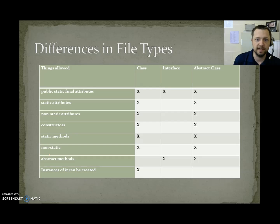Differences in file types. A class can have almost everything, except it can't have abstract methods. A class can have public static final attributes, it can have static attributes, it can have non-static attributes, it can have constructors, it can have static methods, it can have non-static methods, but it cannot have abstract methods. And you can actually create an instance from a class. Interfaces can only have two things, public static final attributes, and abstract methods. An abstract class can have everything an interface can have, and it can have everything a class has. But the only difference is, an abstract class, you're not allowed to create instances of it. All right, we're done.